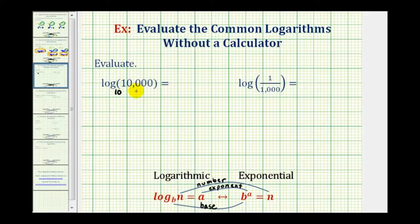To evaluate this common log, we'll set it equal to x and write it as an exponential equation. Once we find x, we know the value of this logarithm. To convert a log equation to exponential form, b is the base, a is the exponent, and n is the number. Start with the base and work around the equal sign to form the exponential equation.